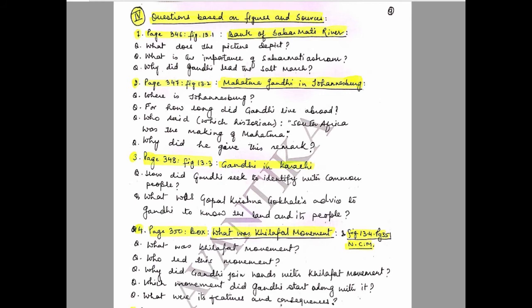Question 1: Page 346, Figure 13.1 — Bank of Sabarmati River. Questions: What does the picture depict? What is the importance of Sabarmati Ashram? Why did Gandhi lead the Salt March?